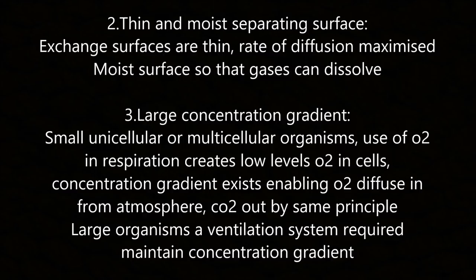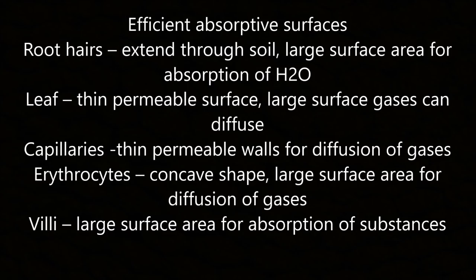Large organisms require a ventilation system to maintain the concentration gradient. Efficient absorptive surfaces include root hairs, which extend through the soil giving a large surface area for H2O absorption. Leaves have a thin permeable surface for gas diffusion. Capillaries have thin permeable walls for diffusion of gases. Erythrocytes have a biconcave shape giving a large surface area. Villi have a large surface area for absorption of substances.